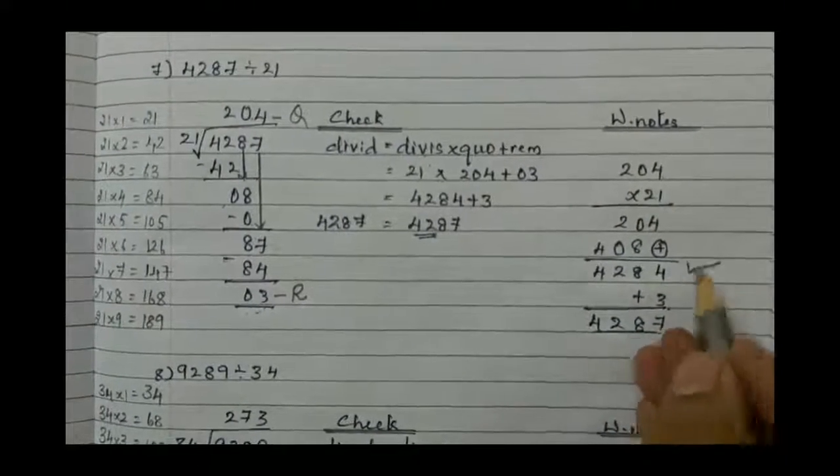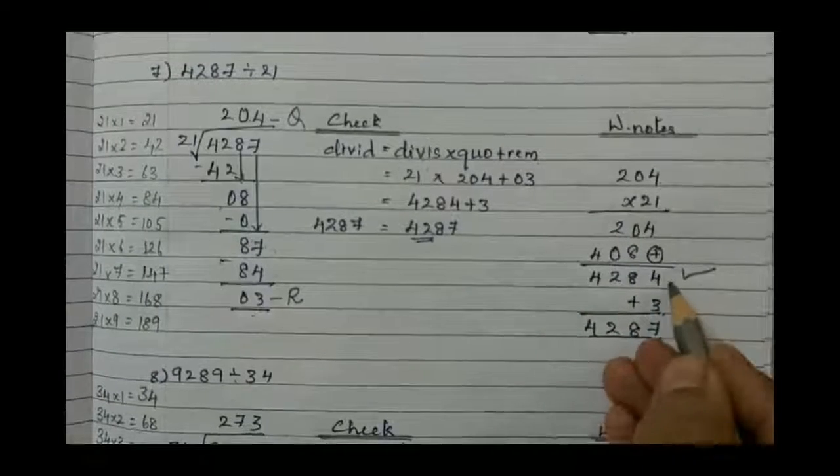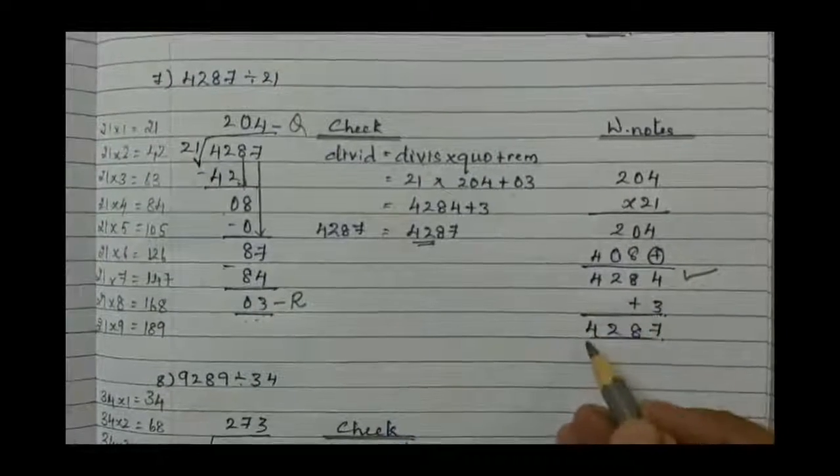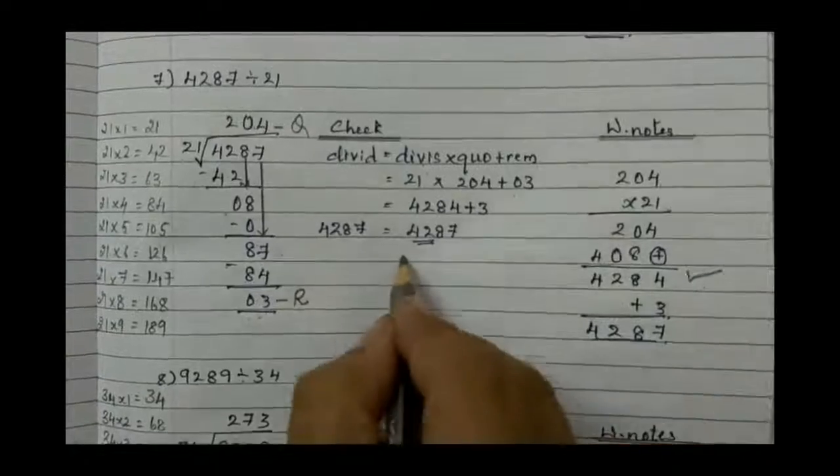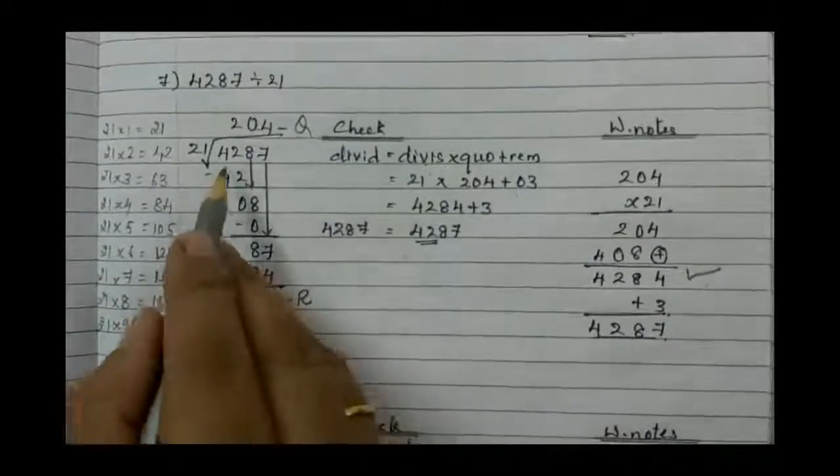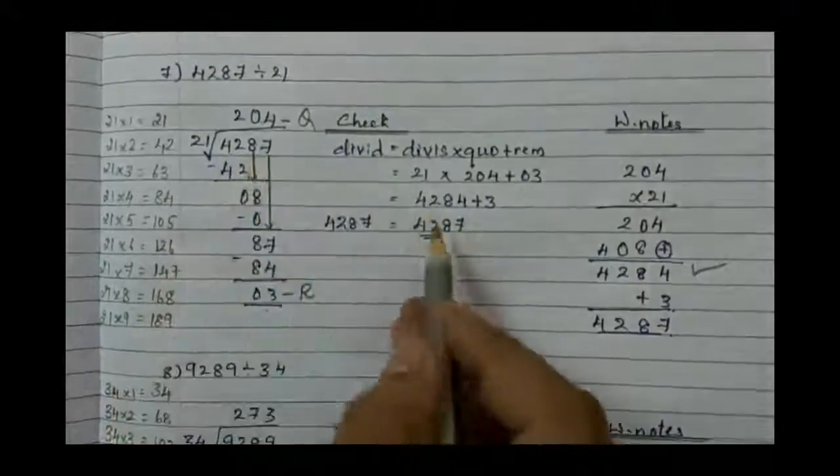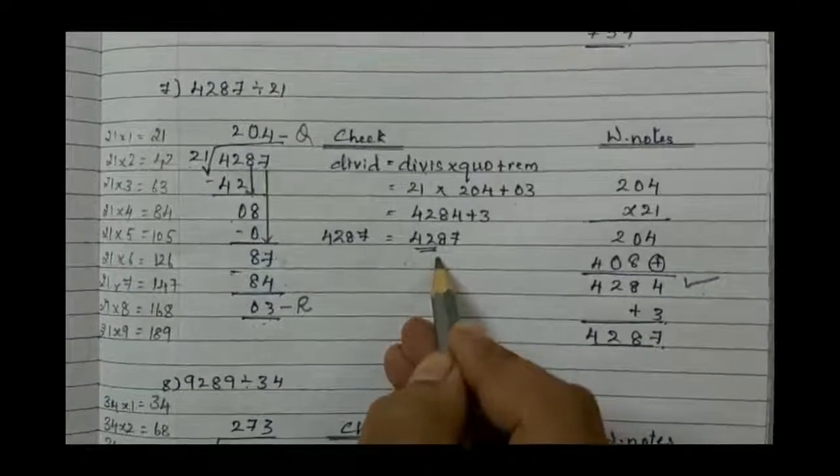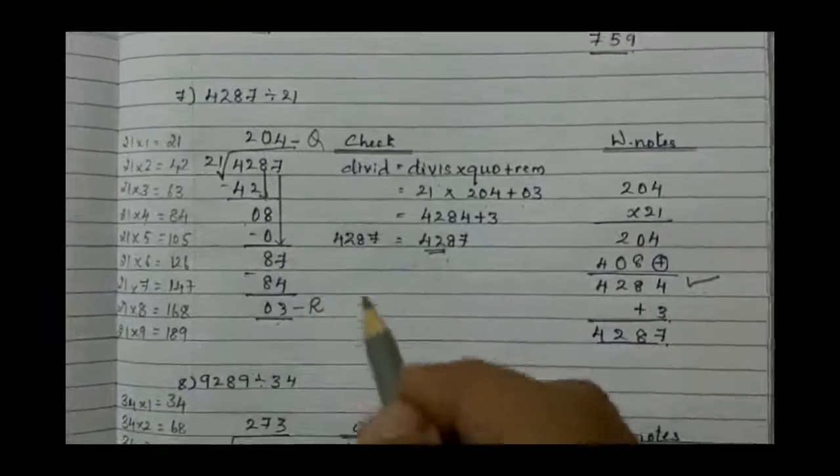204 multiplied by 21 gives 4,284. For that answer, add 3, so it becomes 4,287. What is our dividend? It's 4,287. What we got here? 4,287. That means quotient is right.